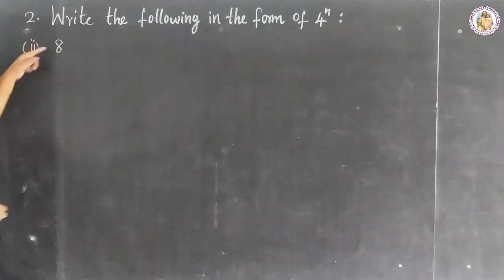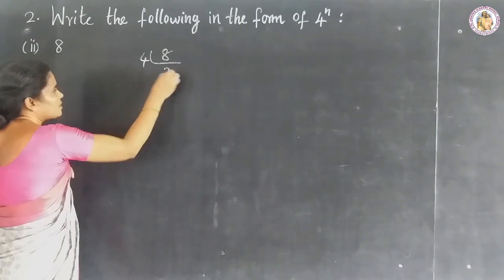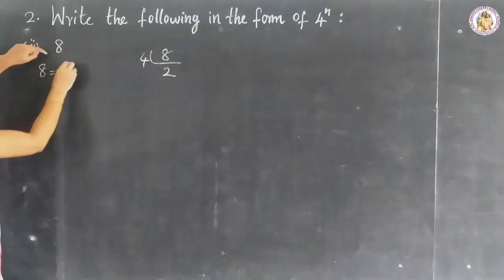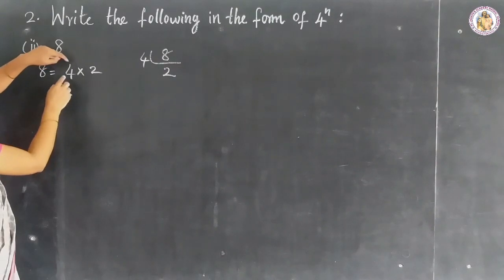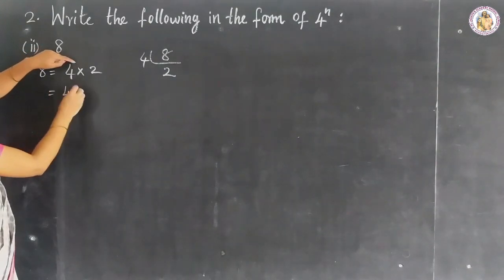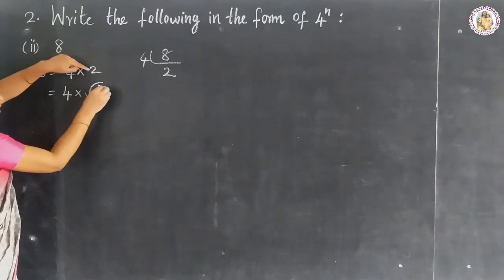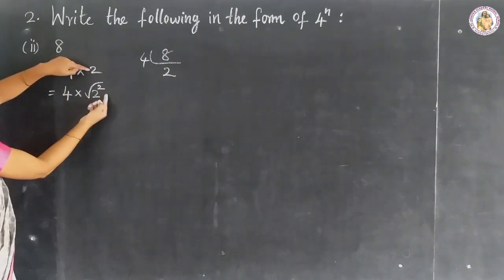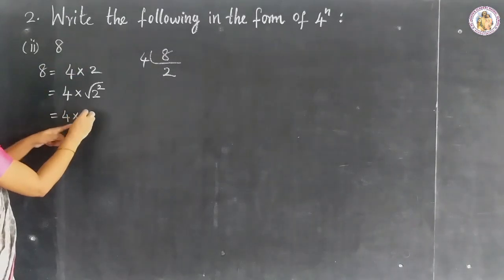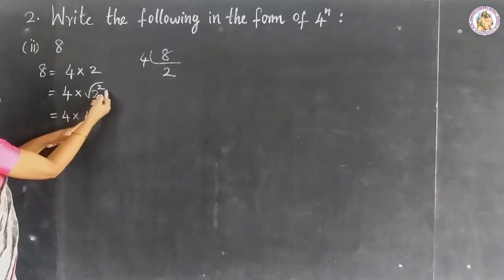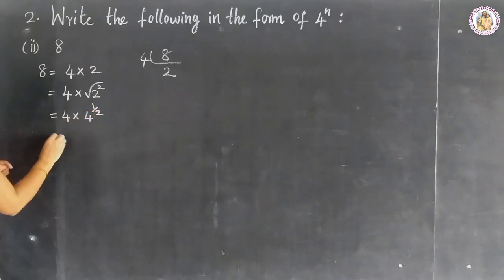Question number 2: 8. Taking the LCM for 8 — 4 twos are 8. So 8 equals 4 × 2. Since we need the form 4 to the power of n, represent 2 as the square root of 2 squared, so that 2 × 2 equals 4. Thus 8 equals 4 × 4 to the power of 1 by 2, giving 4 to the power of 1 plus 1 by 2.